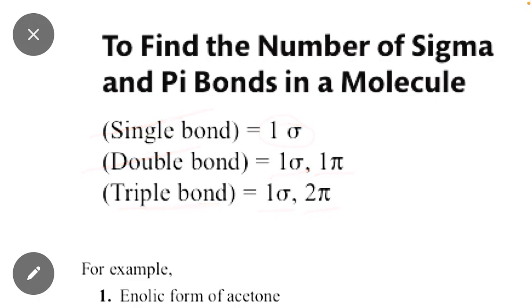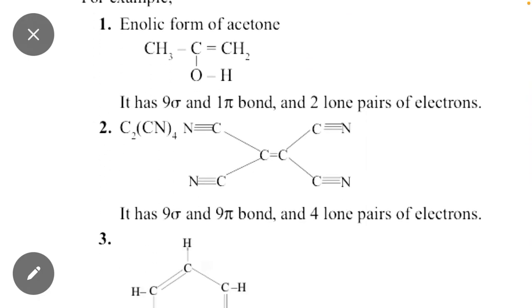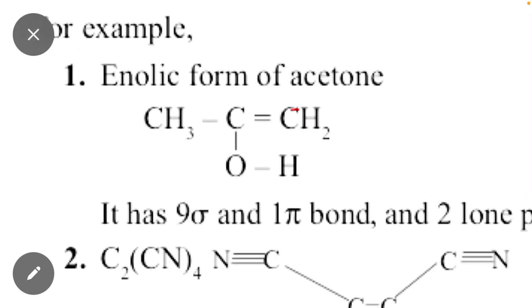Now we will discuss some examples to find number of sigma bonds and pi bonds. The first example is enolic form of acetone. Here 3 hydrogen means 3 sigma bonds,